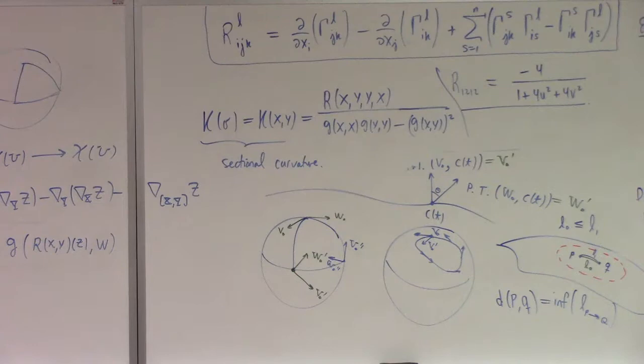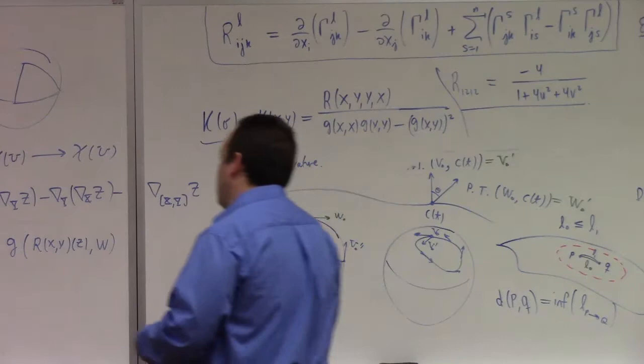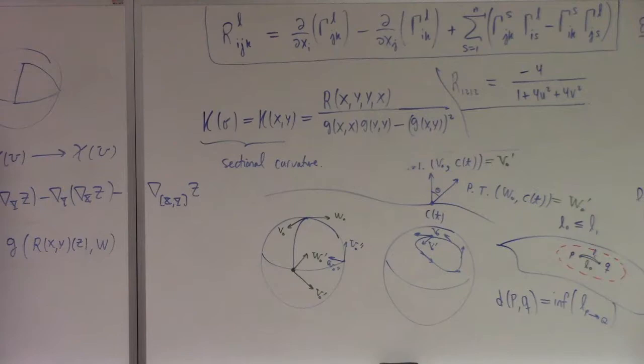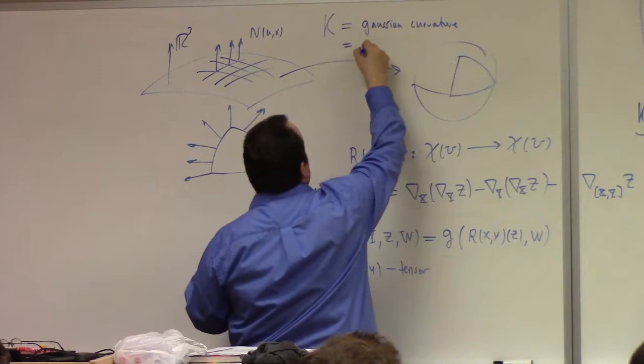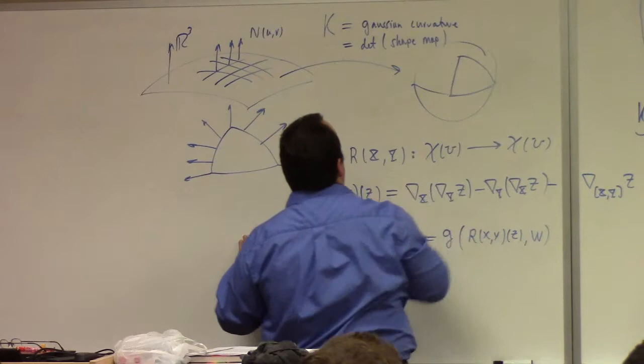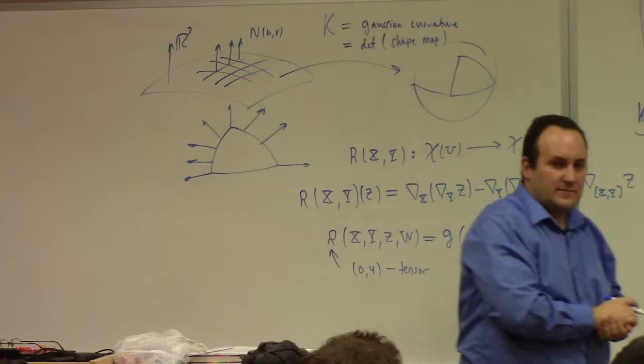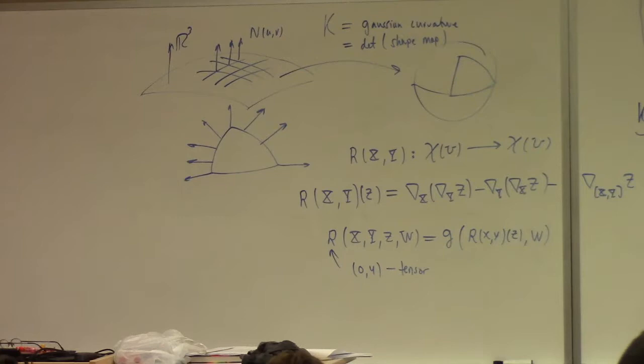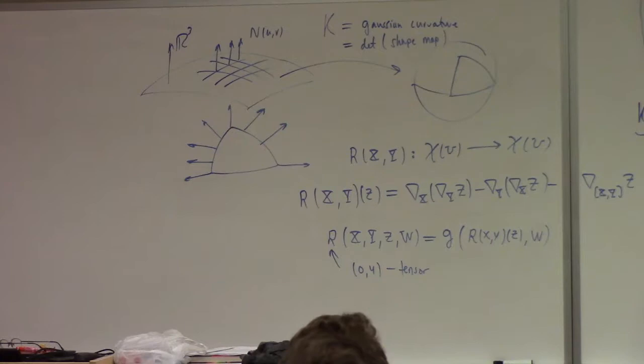In the two-dimensional case, though, in the two-dimensional case, that actually reduces to the Gaussian curvature. The Gaussian curvature is actually the determinant of the shape map. So we usually use K for Gaussian curvature. And I can tell you this, it's equal to the determinant of the shape map. And I don't remember if the shape map is exactly this, but it's related to this. Okay. So, in the context of a two-dimensional case, this monstrosity, this rank, this type 4, 0, 4 tensor reduces to the classical Gaussian curvature in this way.